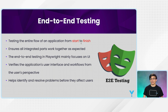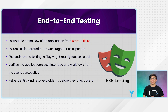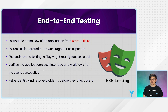End-to-end testing is the concept of testing the entire flow of an application from start to finish, which also includes API testing. Playwright is capable of doing API testing but is mainly focused on UI testing. It ensures all integrated parts work together as expected. Because it is fast, end-to-end testing won't take too much time, and it helps identify and resolve problems before they can affect users.